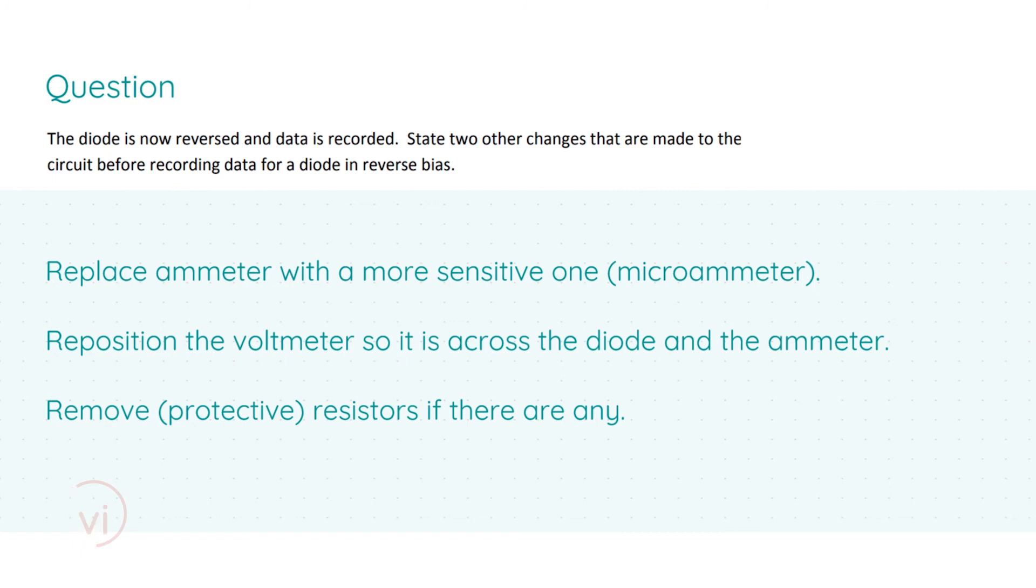After all that with the questions about the configuration of the experiment, the data, and everything like that, we're now given a different scenario. We are told that the diode is now reversed and data is recorded. We are to state two other changes that are made to the circuit before recording data for a diode in reverse bias. Three are accepted in the marking scheme. If you know four, put down four; if you know two, put down two.